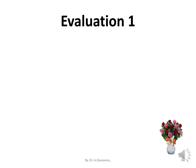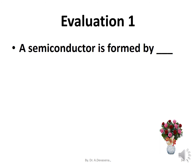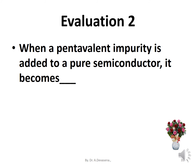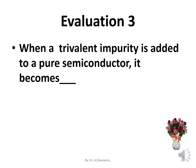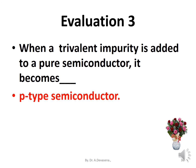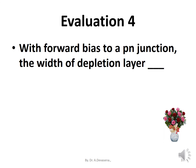Evaluation questions: Q1 — A semiconductor is formed by: Answer — covalent bonds. Q2 — When a pentavalent impurity is added to a pure semiconductor it becomes: Answer — N-type semiconductor. Q3 — When a trivalent impurity is added to a pure semiconductor it becomes: Answer — P-type semiconductor. Q4 — With forward bias to a P-N junction, the width of the depletion layer: Answer — decreases.